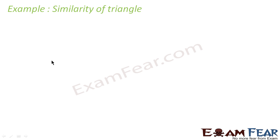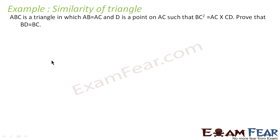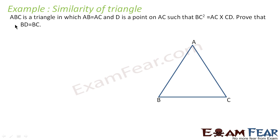This is an example. The question says ABC is a triangle in which AB is equal to AC, and D is a point on BC such that BC squared is equal to AC into CD. We have to prove that BD is equal to BC. Let's draw a triangle — this is triangle ABC, D is a point here, and then join BD. AB is equal to AC, let's say this is x, so AC is also equal to x. D is a point on BC such that BC squared is equal to AC into CD.